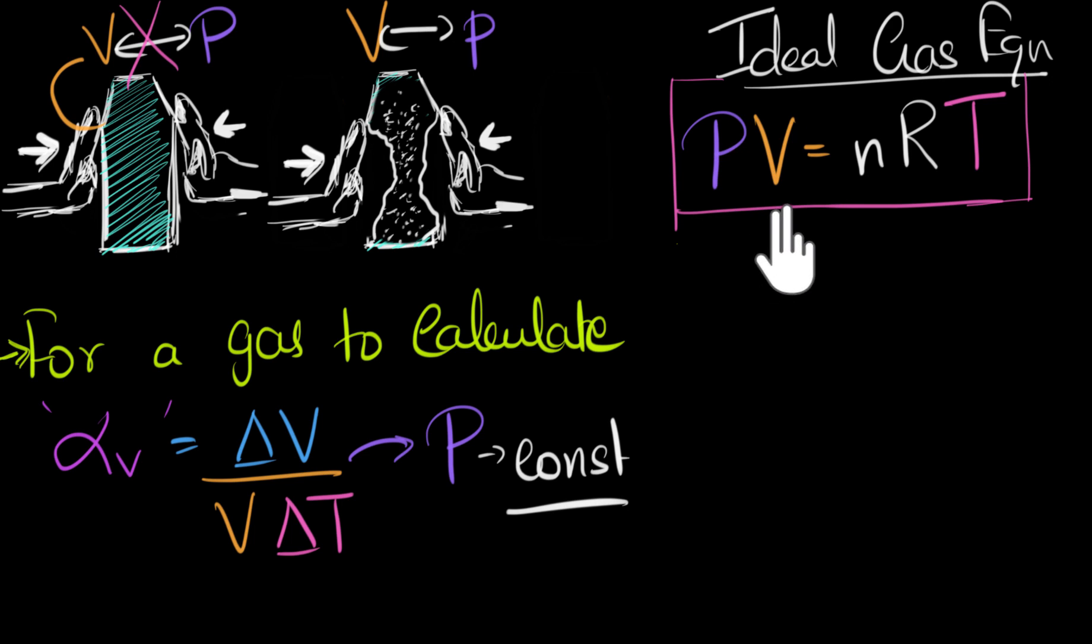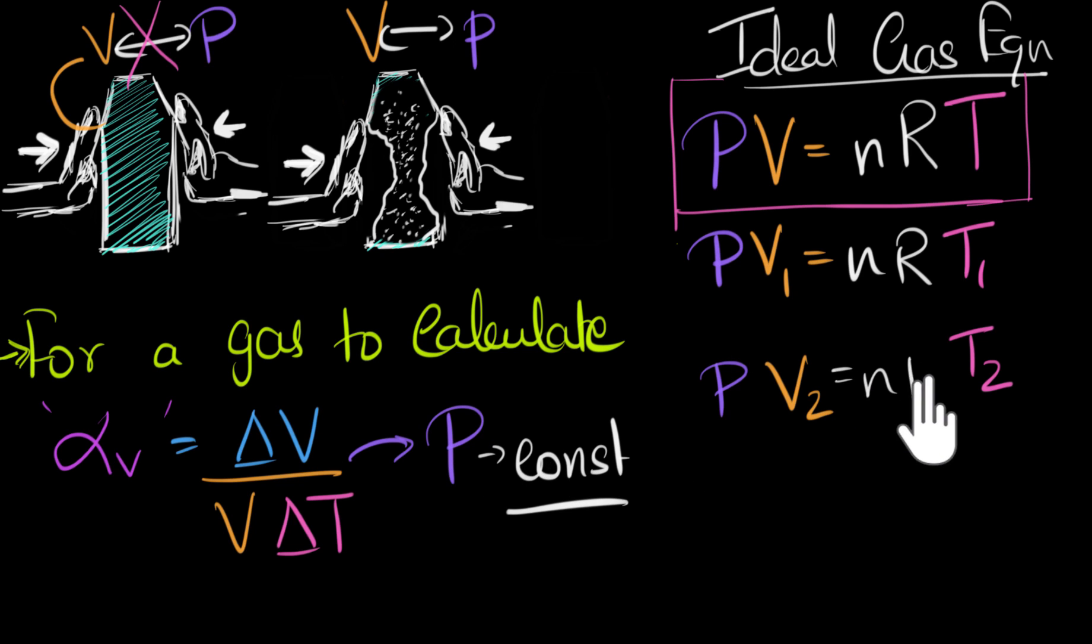Now, to calculate the change in the volume, we need to change the temperature by keeping the pressure constant. So let's do that. Let's say, initially, the temperature is T1 and the volume is V1. So, initially, we would have an equation PV1 equals nRT1. And let's say, finally, the temperature changes to T2, which makes the volume change to V2, and so our final equation would be PV2 equals nRT2. Now, to calculate the changes, let's subtract these two equations.